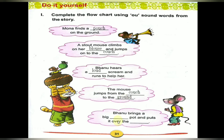Bano brings a big dash pot and puts it over the dash. Bano brings a big round pot and puts it over the mouse. These all are OU sound words from the story: P-O-U-C-H pouch, B-L-O-U-S-E blouse, C-O-U-C-H couch, L-O-U-D loud, G-R-O-U-N-D ground, R-O-U-N-D round, M-O-U-S-E mouse.